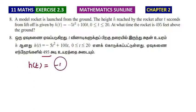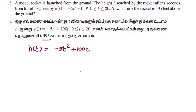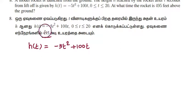The function is h(t) = -5t² + 100t. Now the height is 495 feet. You want to find the time.